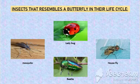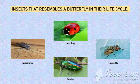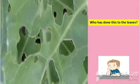Insects that resemble a butterfly in their life cycle are the ladybug, also known as ladybird, mosquito, beetle, and housefly.